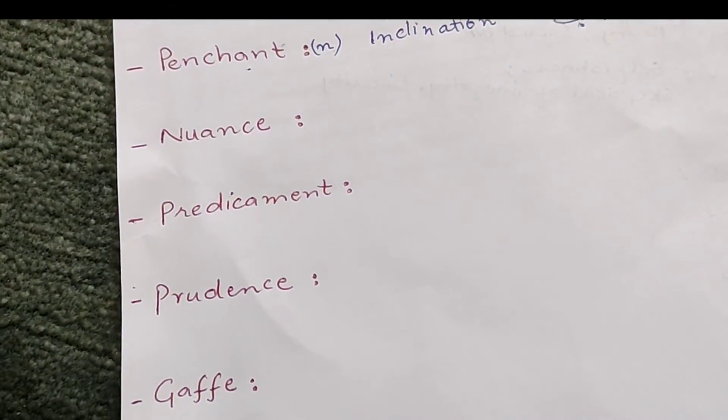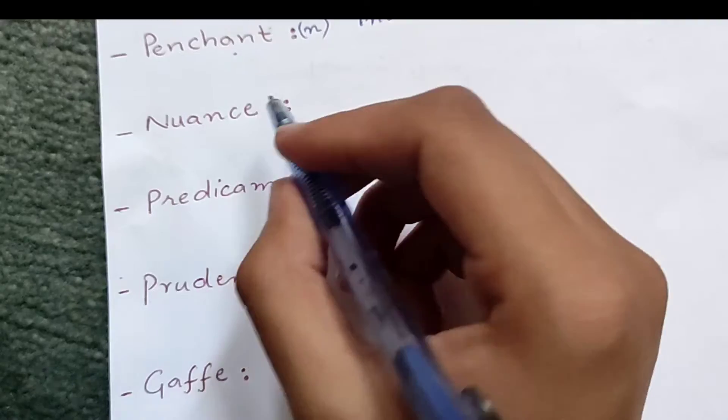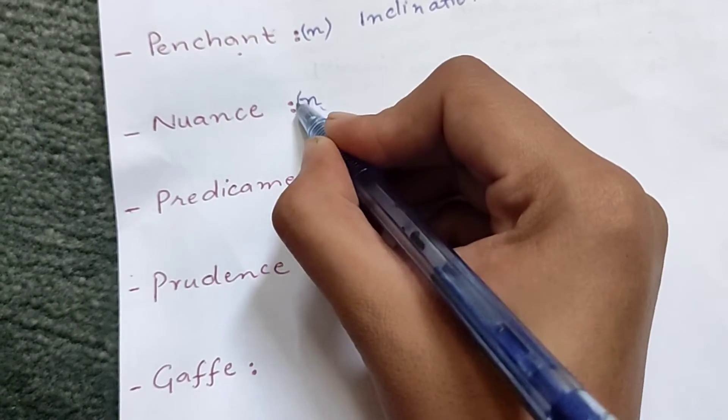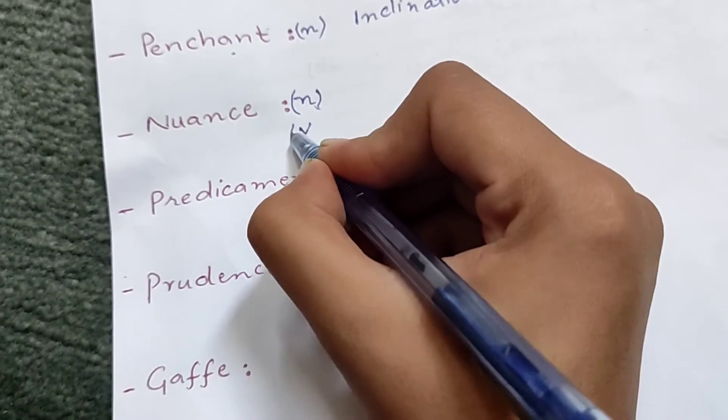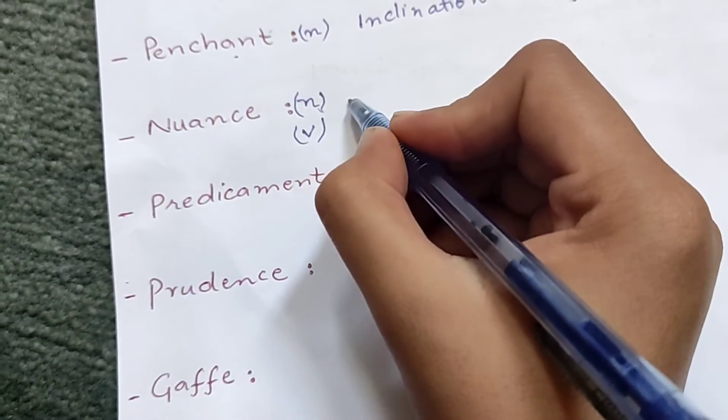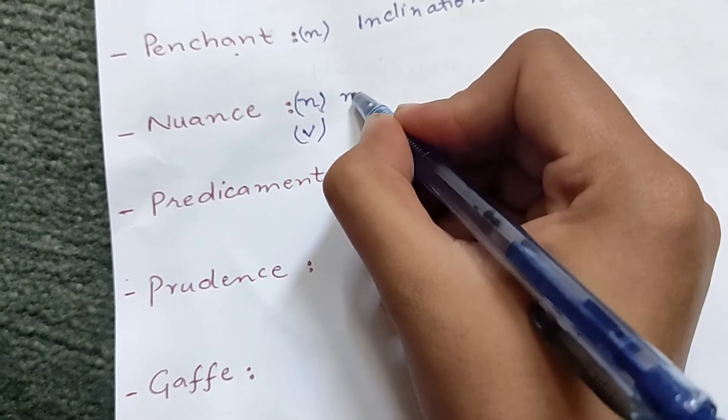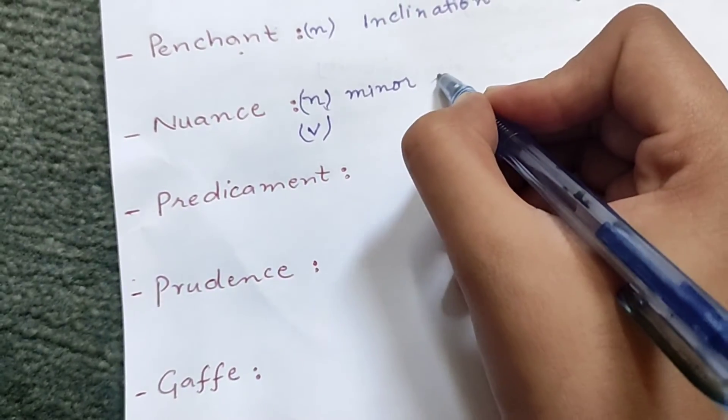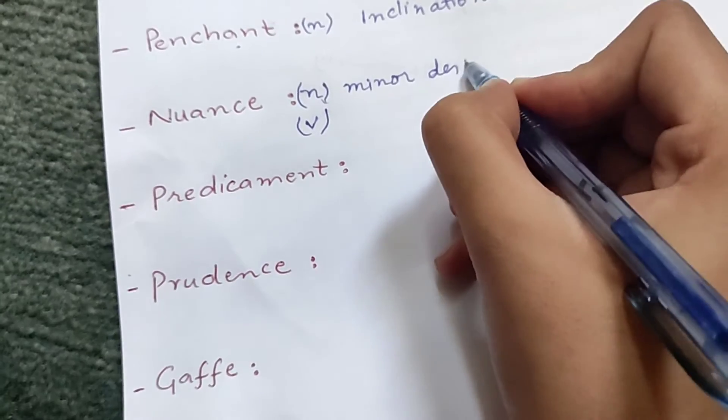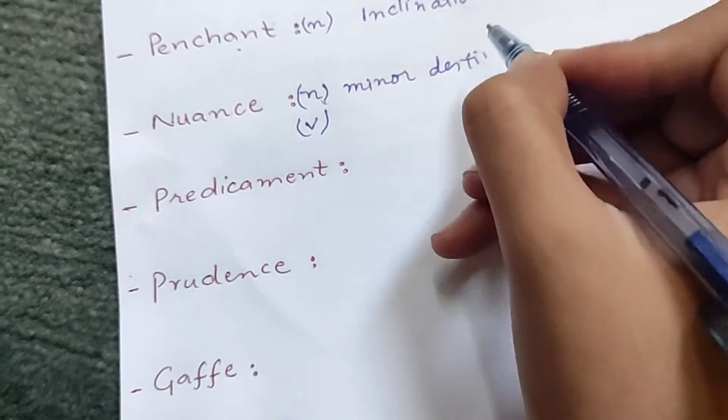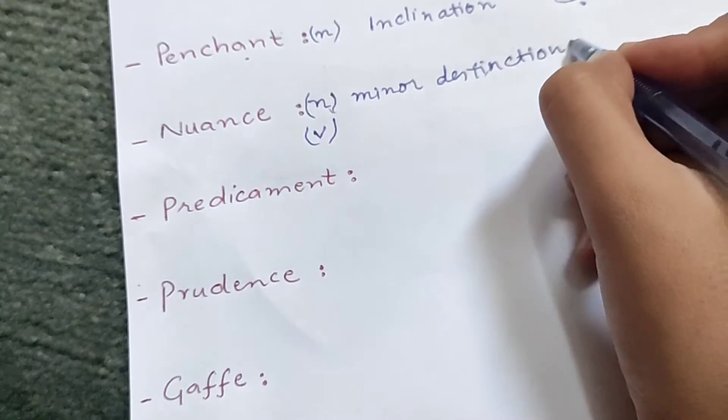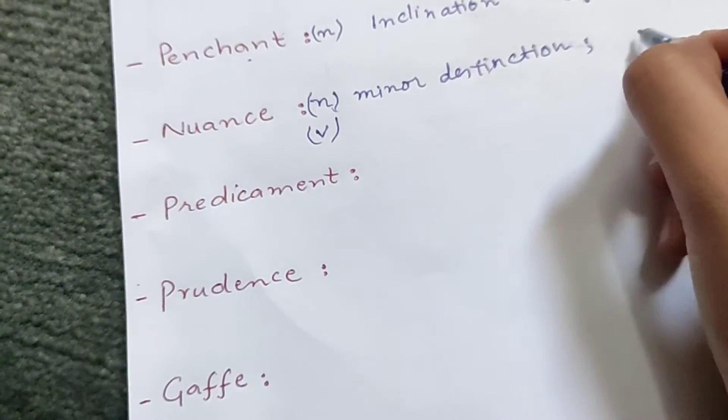The second word is nuance. Nuance is also used as noun as well as verb. If we use nuance as a noun, it means minor distinction, fine detail.